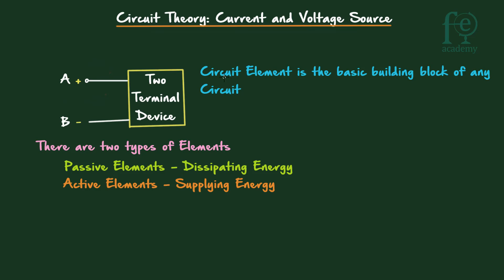We have learned about a circuit element, which is nothing but a two-terminal device. You can see terminal A and terminal B — one terminal is marked positive, another is marked negative. These circuit elements are the basic building blocks of any circuit. There are two types of circuit elements: one is passive element and another one is active element.